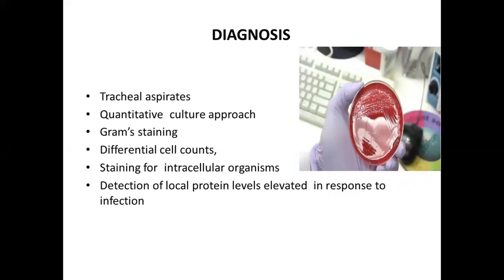For diagnosis, as the patient is not conscious and cannot produce a cough, you should think of other methods to collect sputum. This can be done using tracheal aspirates and a quantitative culture approach. You take sputum via tracheal aspirates, then culture the aspirate, perform Gram staining, look for differential cell counts, staining of intracellular organisms, or detection of local protein levels elevated in response to infection.